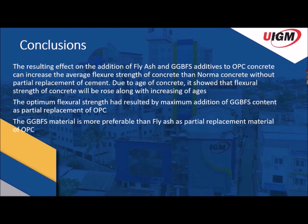The second conclusion: the optimum flexural strength resulted from the maximum addition of GGBFS content as partial replacement of OPC. The third conclusion: GGBFS material is more preferable than fly ash as a partial replacement material for OPC.